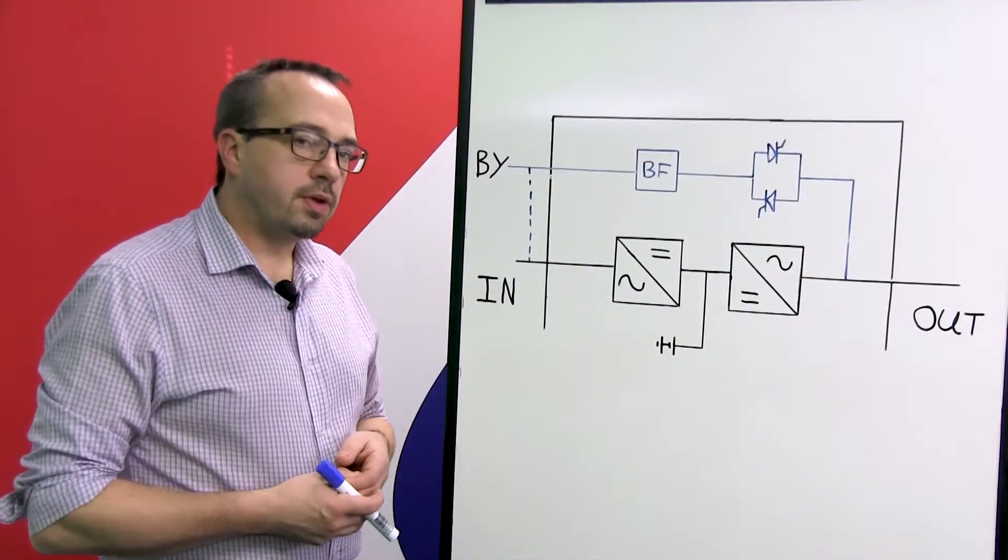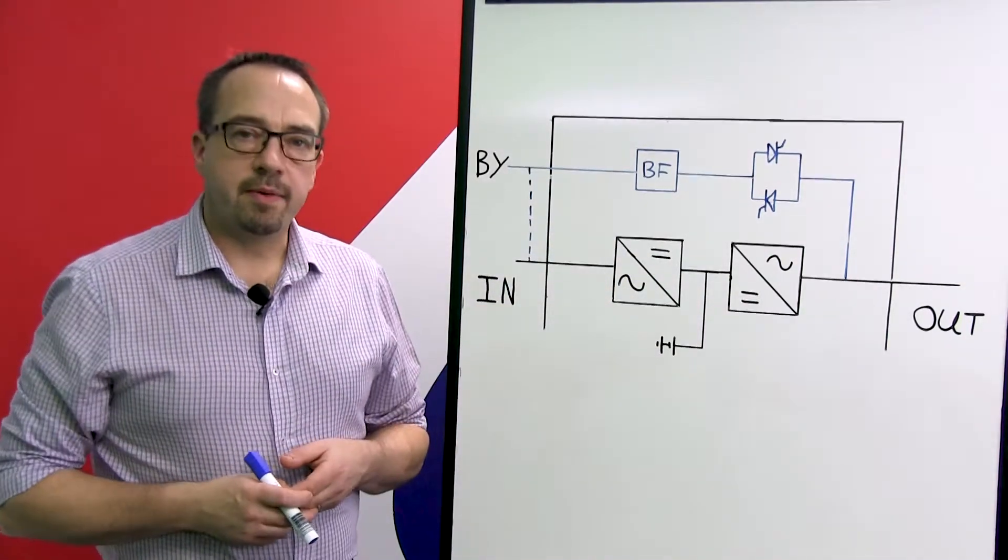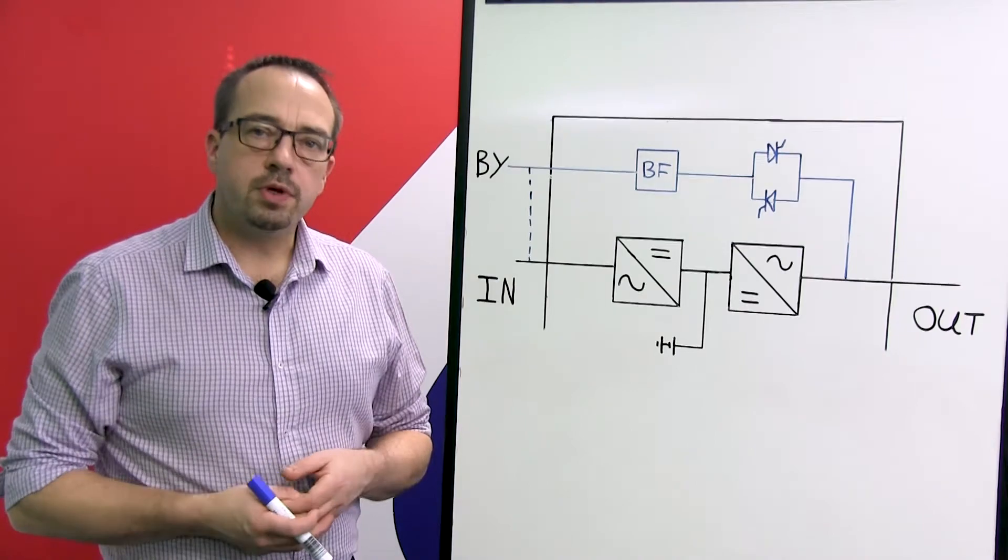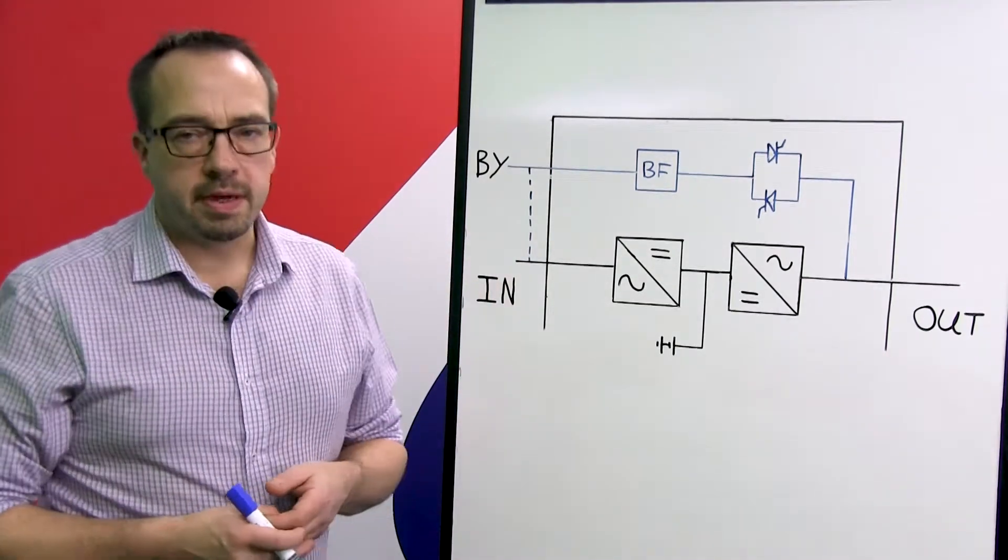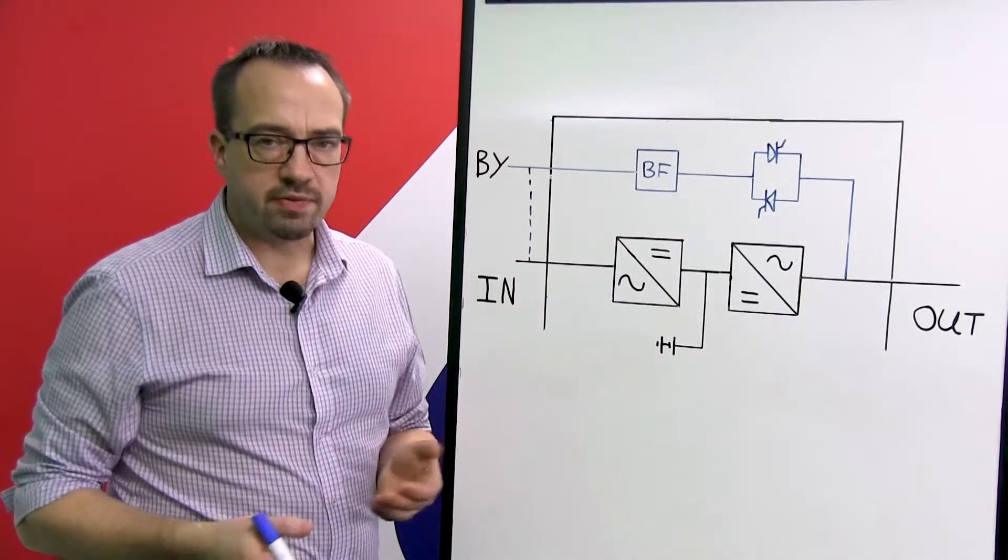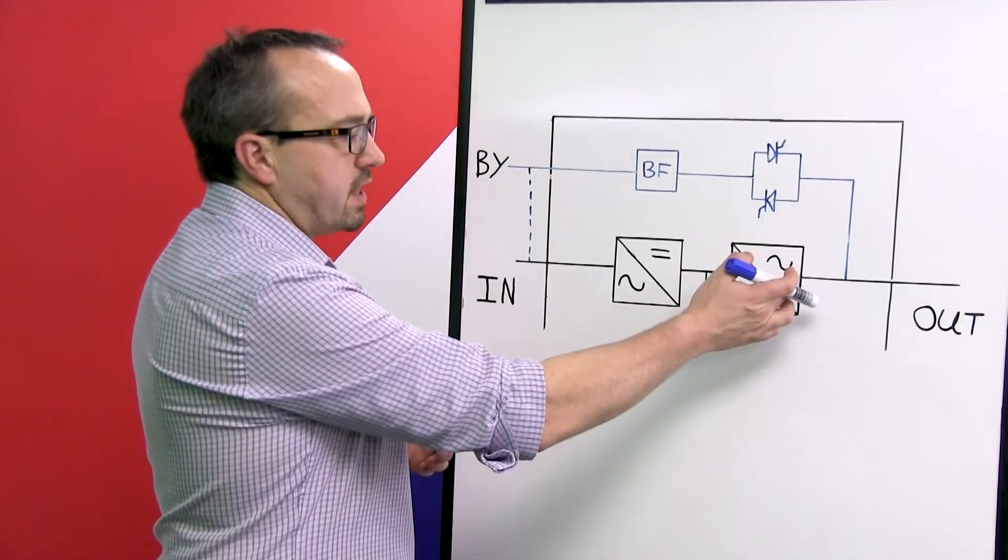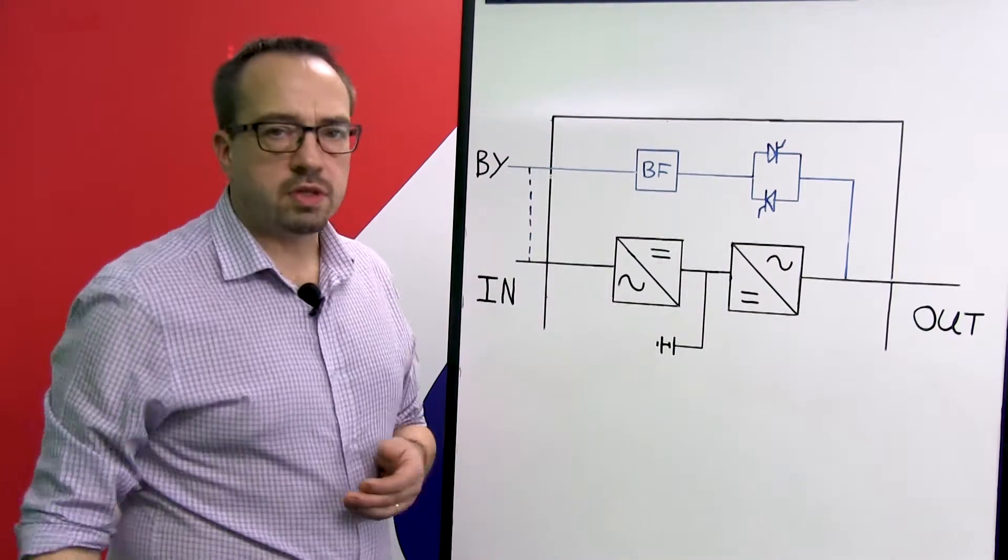If we take a look at the diagram on the board here, this effectively is a basic block diagram of an online dual conversion UPS system. The online dual conversion UPS system operates by taking the voltage from the incoming main supply, converting that voltage from AC to DC via the rectifier, then we re-invert that voltage back from DC back to AC again by the inverter in order to supply that voltage to the critical load.